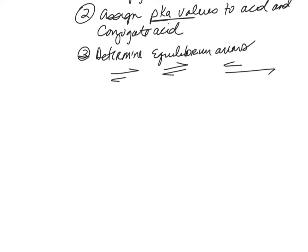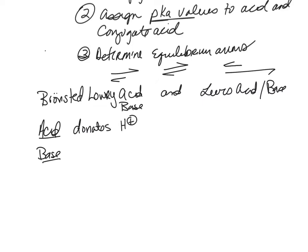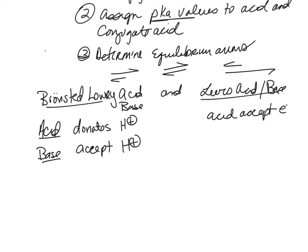Let's start off with talking about the difference between a Bronsted-Lowry acid and base versus a Lewis acid and base. In a Bronsted-Lowry acid, your acid donates a proton and your base will accept a proton. For Lewis acids and bases, there's not a proton available. Your Lewis acid will accept an electron pair, and then your base will donate an electron pair.